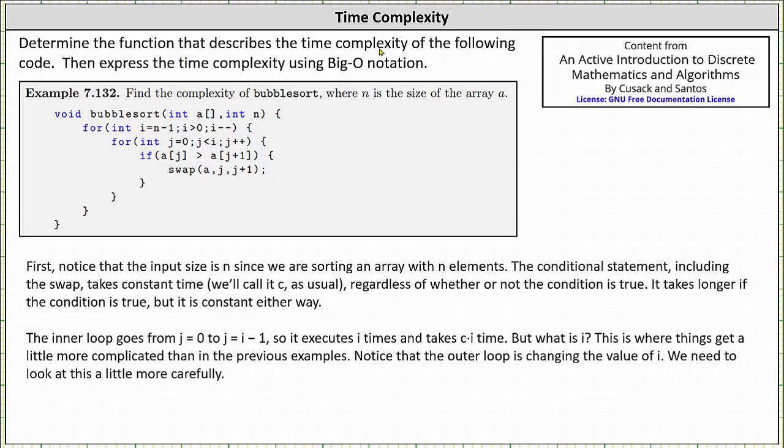We're asked to determine the function that describes the time complexity of the following code, then express the time complexity using big O notation. Analyzing the code first, notice that the input size is n since we are sorting an array with n elements. The conditional statement including the swap takes constant time regardless of whether or not the condition is true. We will call that constant time c. It takes longer if the condition is true, but it is a constant either way.